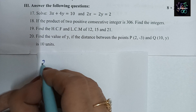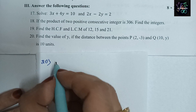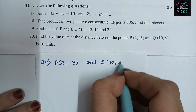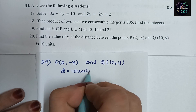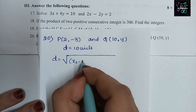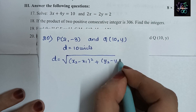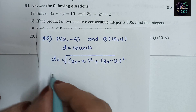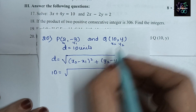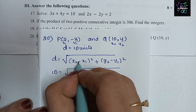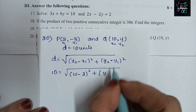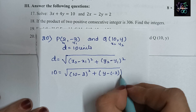Question number 20: find the value of y if the distance between points P(2, −3) and Q(10, y) is 10 units. We know the distance formula: d = √[(x₂ − x₁)² + (y₂ − y₁)²]. The distance is given as 10, so: 10 = √[(10 − 2)² + (y − (−3))²].